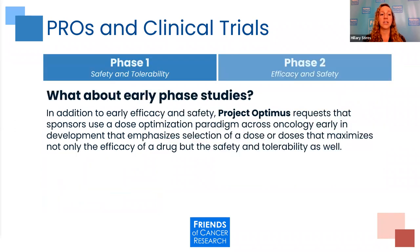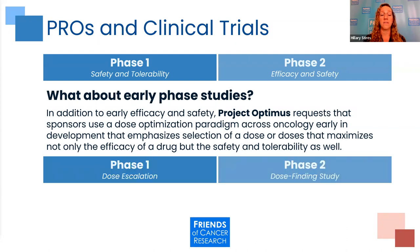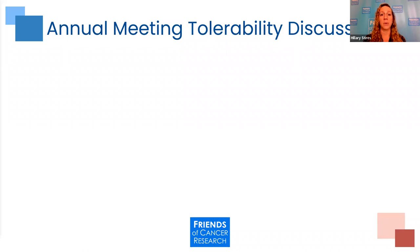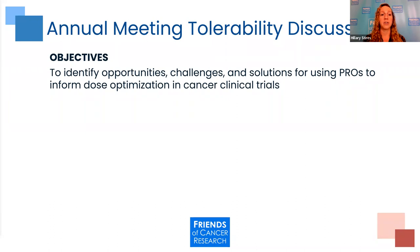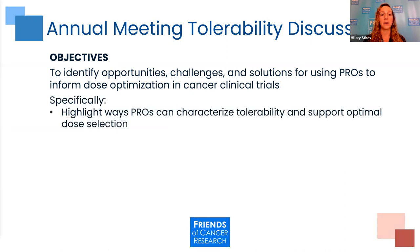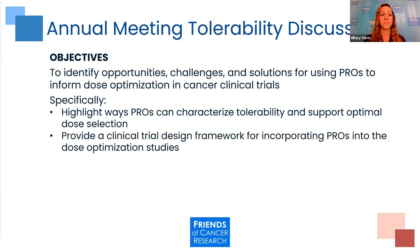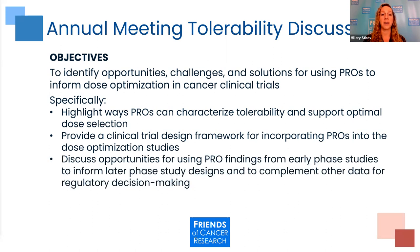What about early phase studies? In addition to early efficacy and safety, Project Optimist requests that sponsors use a dose optimization paradigm across oncology early in development that emphasizes selection of a dose or doses that maximizes not only efficacy but also safety and tolerability. We can think about the phase 1 trial as a dose escalation trial and the phase 2 trial as a dose finding study. The annual meeting tolerability discussion will identify opportunities, challenges, and solutions for using PROs to inform dose optimization in cancer clinical trials — highlighting ways PROs can characterize tolerability, support optimal dose selection, provide a clinical trial design framework, and discuss opportunities for using PRO findings from early phase studies to inform later phase designs and complement data for regulatory decision making.